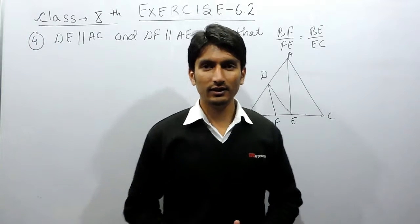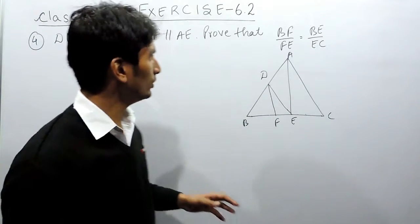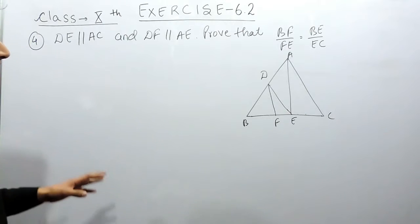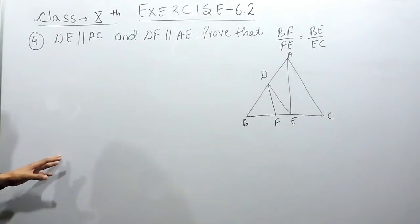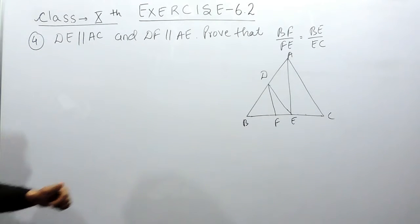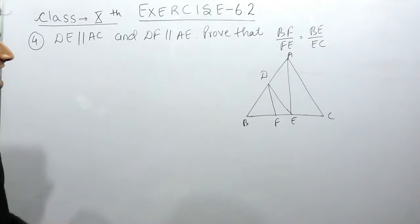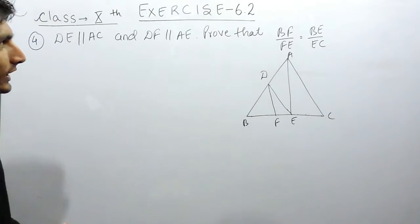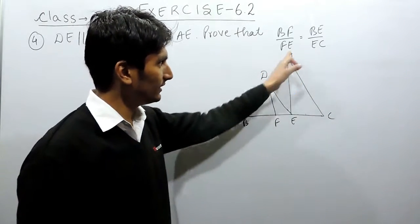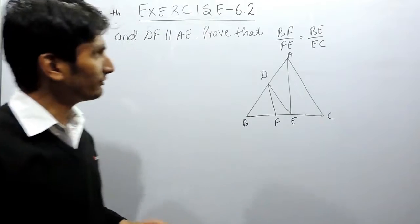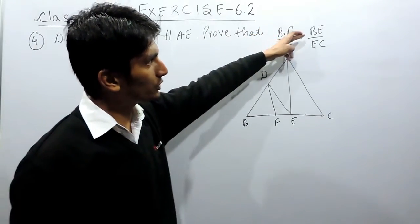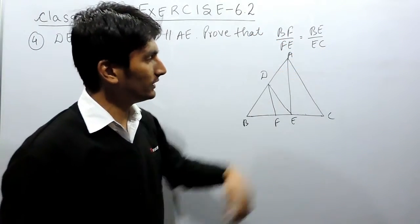Hello everyone. In this video we are going to solve question number 4 of exercise 6.2. The question says DE is parallel to AC and DF is parallel to AE, as given in this figure ABC, and you have to prove that BF upon FE is equal to BE upon EC.